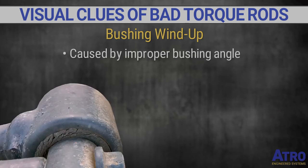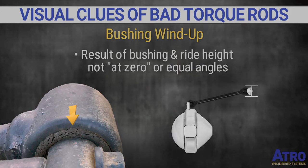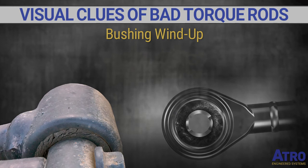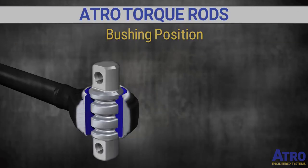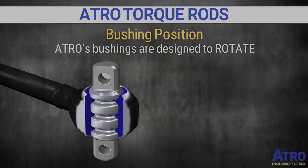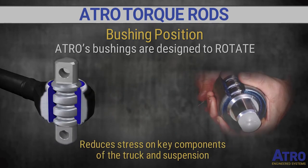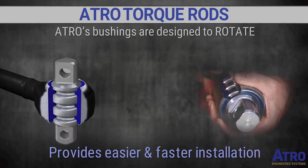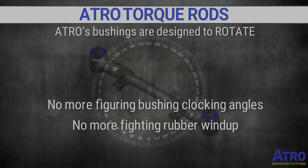Bushing wind-up is caused by improper bushing angle. Look for radial cracks in the rubber. It is the result of the bushing not being clocked to match the angle of the mounting brackets, causing accelerated wear due to pre-loaded rotational force. Bushing position challenges are eliminated with Atro bushings because they are designed to rotate, relieving the stress inherent in bonded rubber while reducing stress on key truck components. This means easier and faster installation by eliminating the time and effort of figuring out bushing clocking angles and rubber wind-up.